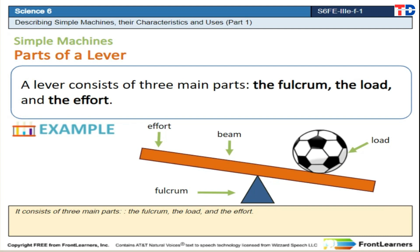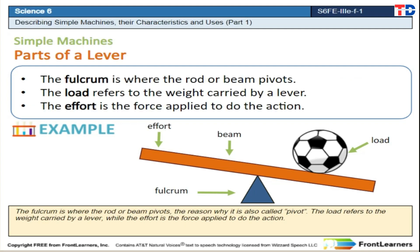It consists of three main parts: the fulcrum, the load, and the effort. The fulcrum is where the rod or beam pivots, the reason why it is also called pivot. The load refers to the weight carried by a lever, while the effort is the force applied to do the action.